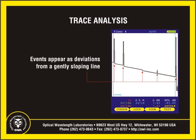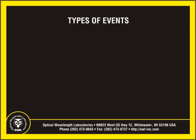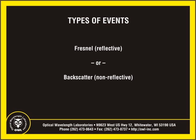The primary function of an OTDR is to locate events along a span of optical fiber. On an OTDR trace, these events appear as deviations from an otherwise gently sloping line. Before continuing, it will be helpful to review the types of events that may appear on an OTDR trace. There are two types of events detectable by an OTDR: Fresnel or reflective, and backscatter or non-reflective.